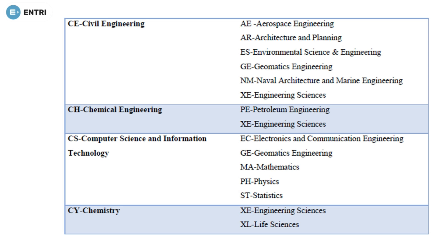If you are a Civil Engineer, you can attend many papers: Aerospace Engineering, Architecture and Planning, Environmental Science and Engineering, Geomatic Engineering, Naval Architecture and Marine Engineering, and Engineering Sciences. If you are from Chemical Engineering, you can attend two papers: Petroleum Engineering and Engineering Sciences. If you are from the Computer Science and Information Technology department, you can attend: Electronics and Communication Engineering, Geomatic Engineering, Mathematics, Physics, and Statistics.